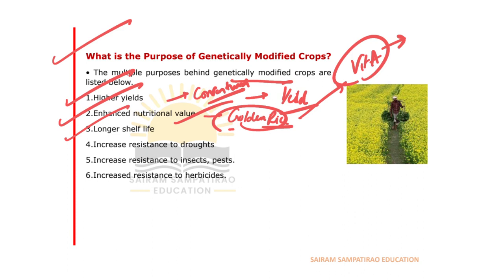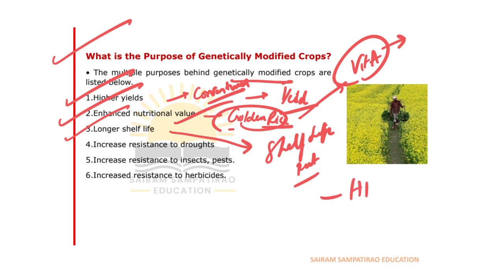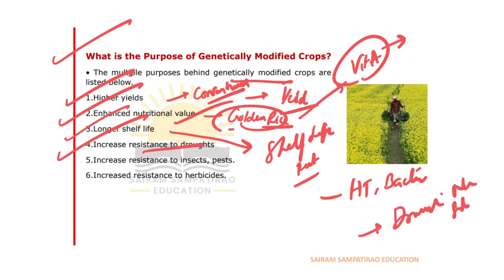GMO crops also have a longer shelf life because they are resistant to pests and microbes, making it difficult for microorganisms to decompose or degrade them. They are herbicide-tolerant and bacterial-resistant. Additionally, they show increased resistance to drought — they can survive in very dry, salty, or acidic conditions and in extreme weather conditions where conventional plants cannot survive.